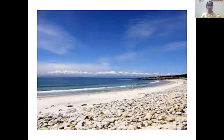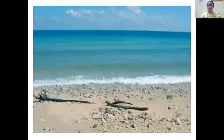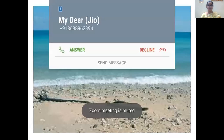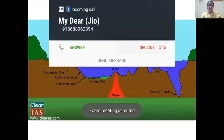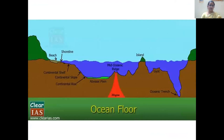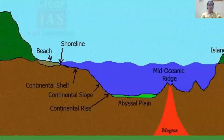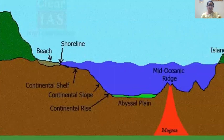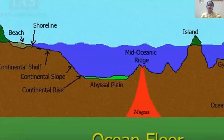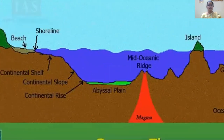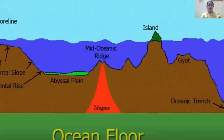Here we observe the seashore and the beach. The green part shows the continent, the gray color indicates the beach, and then comes the shoreline. From the shoreline to a depth of 100 to 200 meters is the continental shelf. From 200 meters to 3000 meters is the continental slope. Going deeper we find the continental rise, and the flat area underneath the seabed is called the abyssal plain or deep sea plain.